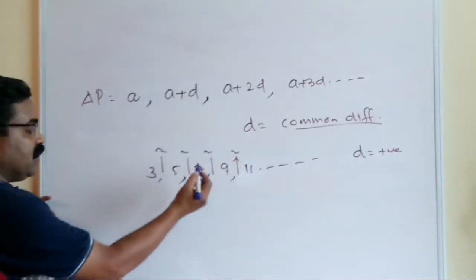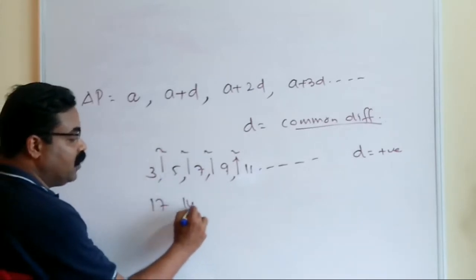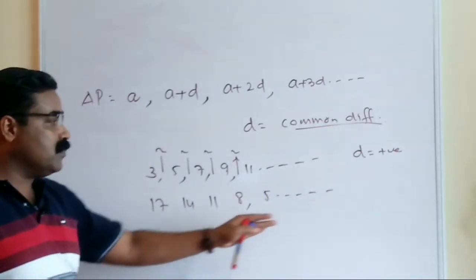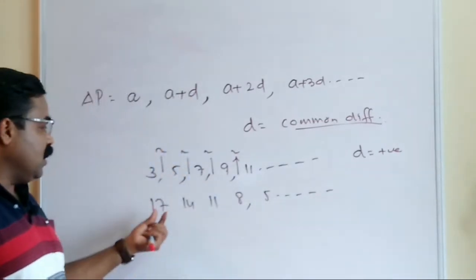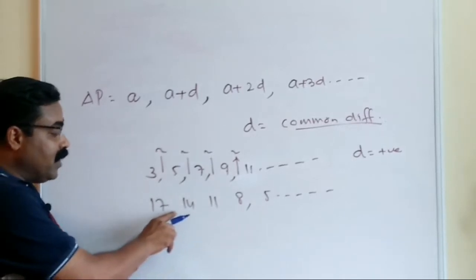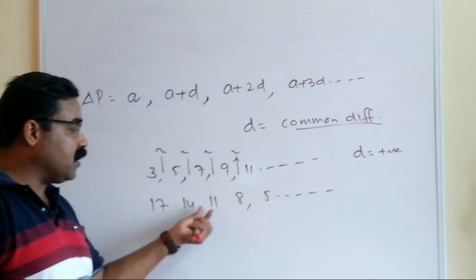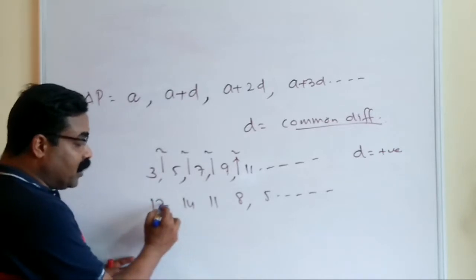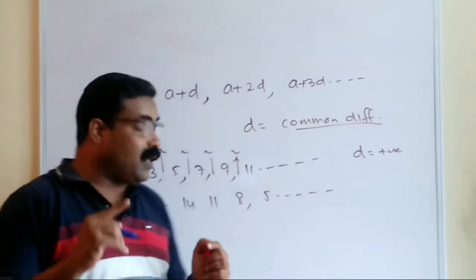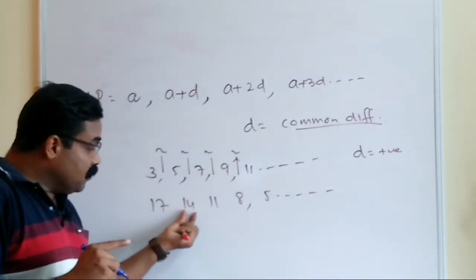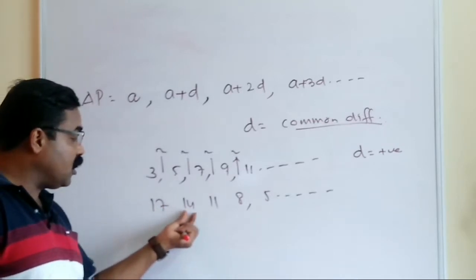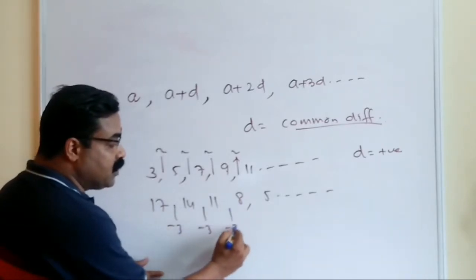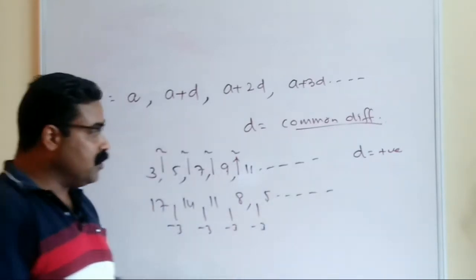If I take a series starting from 17 and subtract 3 each time, I get 17, 14, 11, 8, 5, and eventually negative numbers. Here I am adding minus 3 each time. The common difference is always found by subtracting a term from its next term: 14 minus 17 = -3, 11 minus 14 = -3, 8 minus 11 = -3. So the common difference here is negative.